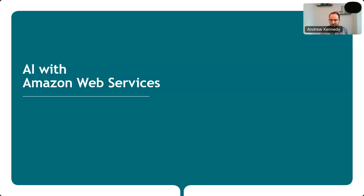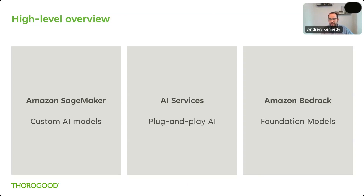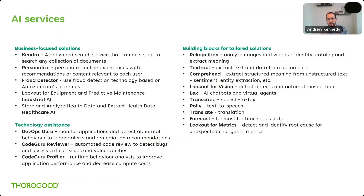Let's take a look at what's available in Amazon Web Services. First, I'll talk through Amazon SageMaker, which is used for custom AI and machine learning models within the AWS platform, and some of the AI services available through AWS. The AI services are a set of out-of-the-box services that capitalize on all the data Amazon has had access to in training these models. Some are business-focused solutions — things like Kendra, which is an AI-powered search service where you can load your own documents and use Amazon's trained AI to search your data.